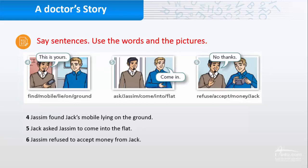Find mobile, lie on ground. So Jassim found Jack's mobile lying on the ground. We have two verbs, the first one then the second one with -ing, and in the middle there is a noun. Five: Jack asked Jassim to come into the flat. So we have two verbs, asked, then to, then come, the second verb which is the basic form. Six: Jassim refused to accept money from Jack. So we have two verbs, between them the word is to.